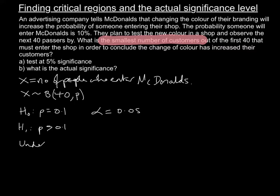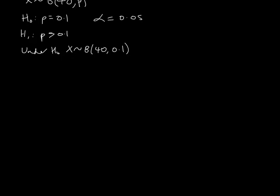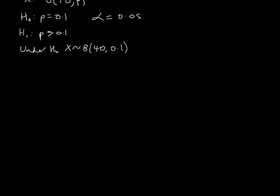We need to look at where this critical value is. Under H0, X has a binomial distribution with n = 40 and p = 0.1. We're going to look at those tables to find the values. We need to find where the probability of X greater than or equal to the upper critical value, C_U, is less than or equal to 0.05.